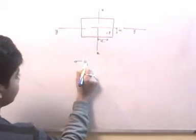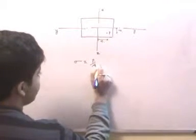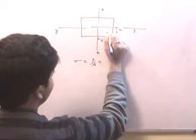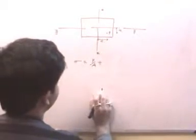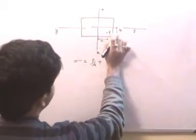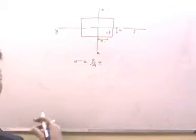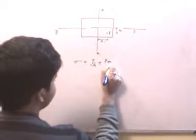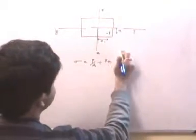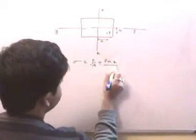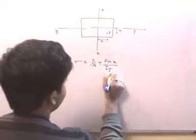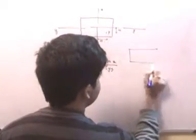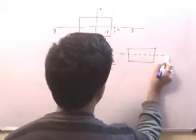What will be the stress σ induced at any general point? Sigma equals P/A plus the bending terms. P times m gives the bending moment about the zz axis, and that term is P·m·z / I_yy, as we have seen in beam theory.